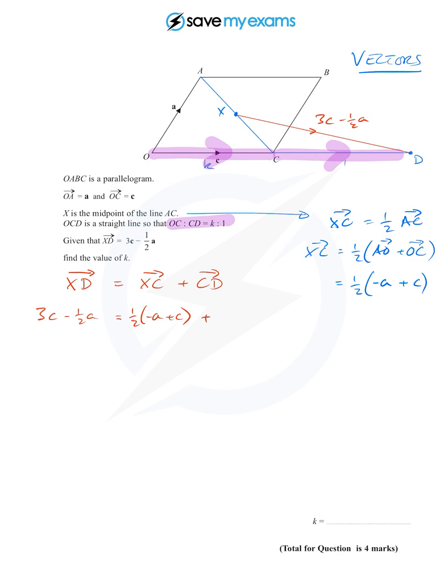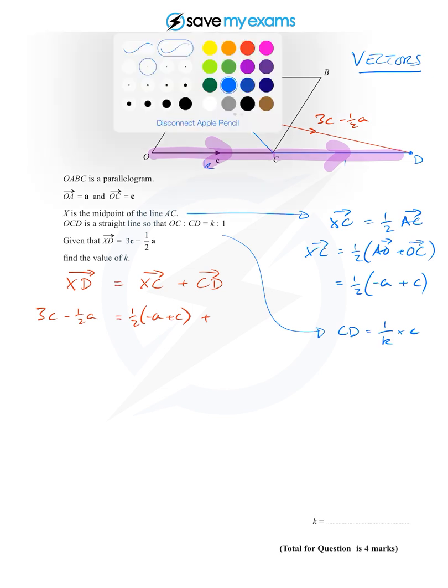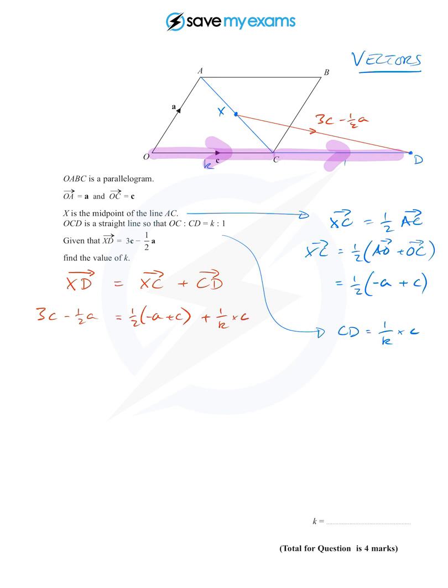Because we've drawn our diagram well, CD is one over k times the little vector c. So let's put that into our equation—that's one over k times c.